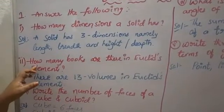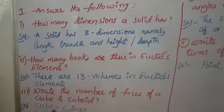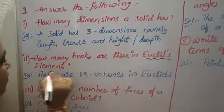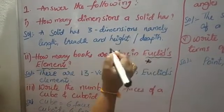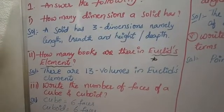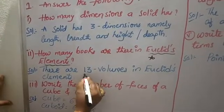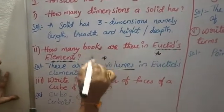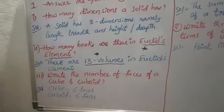Now coming to the second question: how many books are there in Euclid's Elements? There are already 13 volumes. This is most important — the total is 13 volumes.